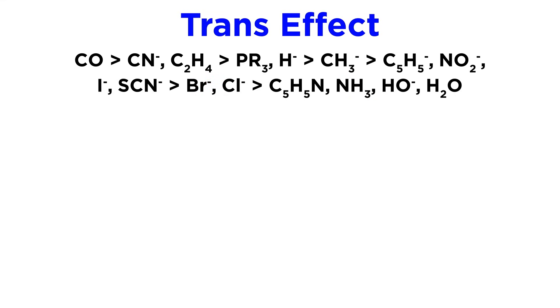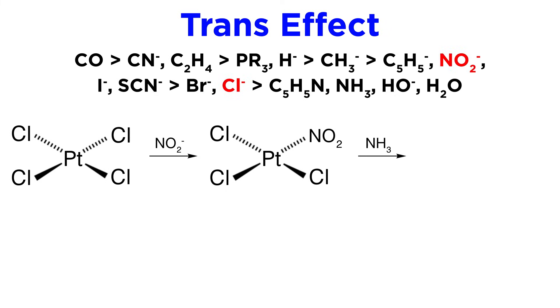We should be able to do this with a sequence as well. Here is platinum with four chloride ligands. If nitrite reacts, followed by ammonia, what will happen? First, the nitrite will displace any chloride. Then, because nitrite beats chloride in terms of the trans effect, ammonia will end up trans to the nitrite.